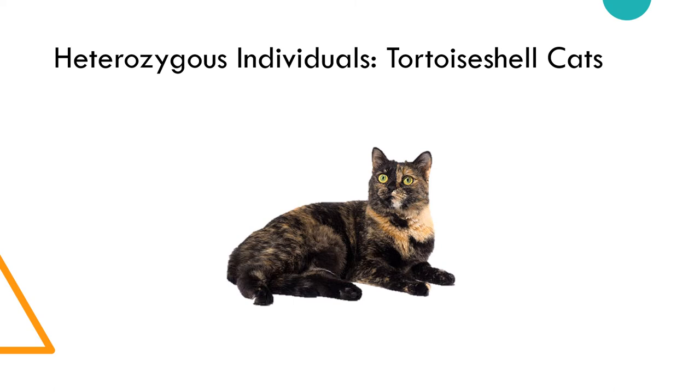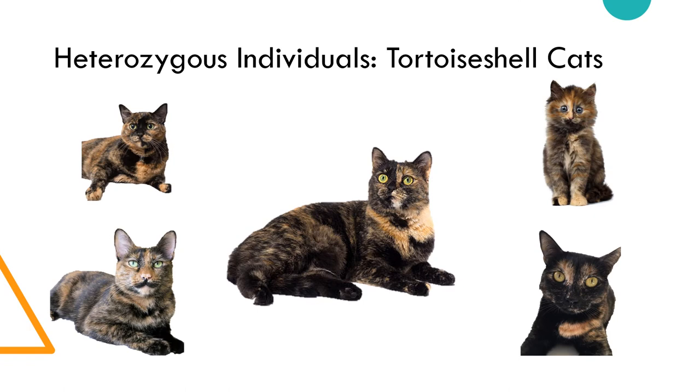The resulting phenotype is a mosaic of black and yellow fur called tortoiseshell. Each tortoiseshell cat is unique, as determination of the Barr body in each cell is completely randomized, and therefore cloning a tortoiseshell cat will not result in a new cat with the same coat pattern as the original, despite their identical DNA.